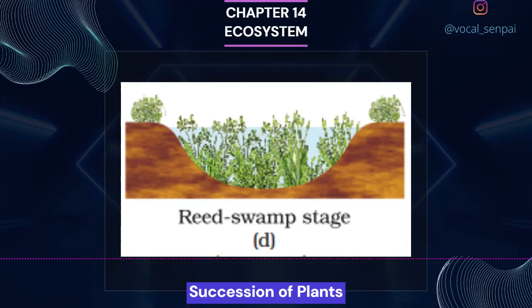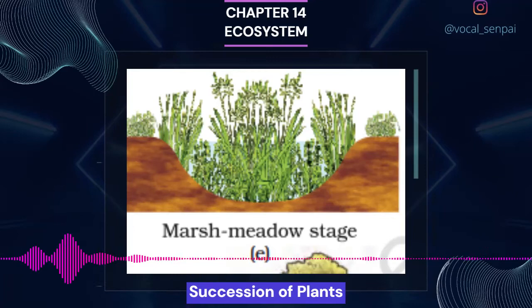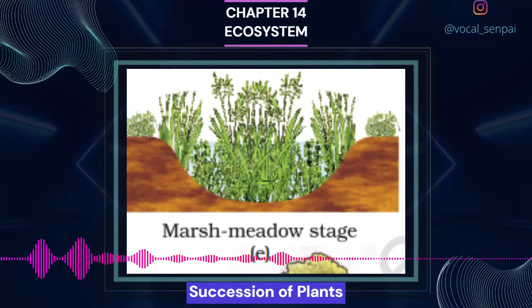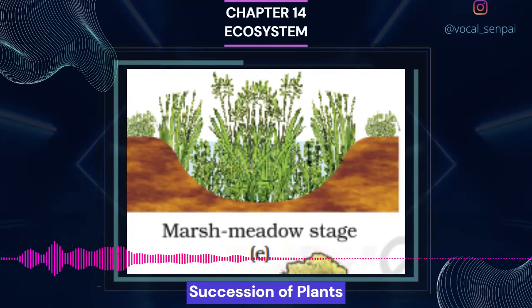The climax community remains stable as long as the environment remains unchanged. With time the xerophytic habitat gets converted into a mesophytic one. In primary succession in water, the pioneers are the small phytoplanktons, which are replaced with time by rooted submerged plants, rooted floating angiosperms followed by free-floating plants, then reed swamp, marsh meadow, scrub and finally the trees. The climax again would be a forest. With time the water body is converted into land.